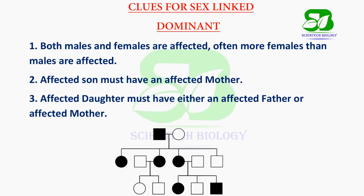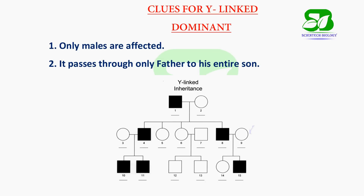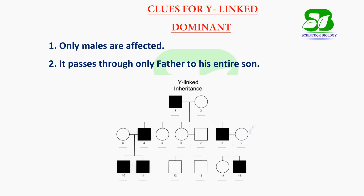Now let's see the sex-linked dominant pedigree. Here, the female is more affected and the affected son in the third generation has an affected mother. Whereas in a sex-linked recessive pedigree, the male is more affected and the affected male passes the trait to his son. In a Y-linked pedigree, only males are affected in a generation. But in a mitochondrial pedigree, all children are affected and the trait must come from the mother.